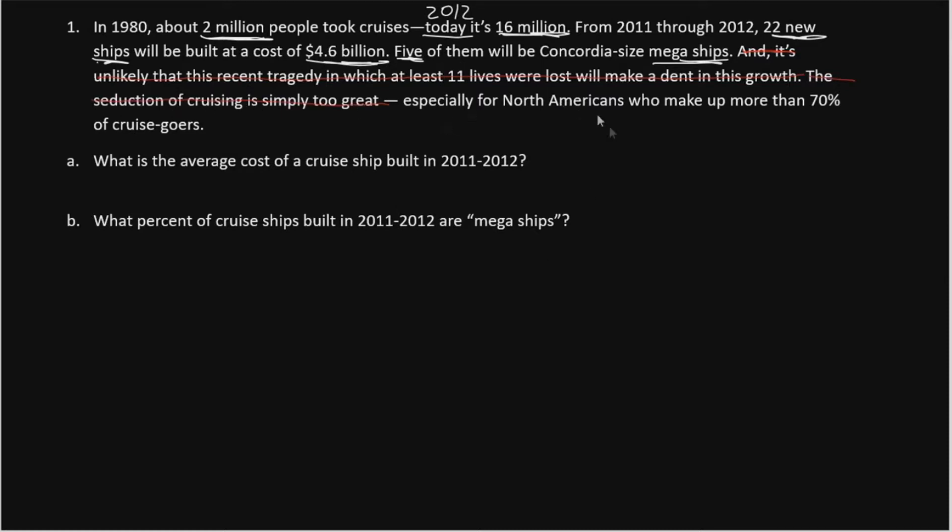The seduction of cruising is too great? Probably not going to help us either. Let's cross that out. Especially for North Americans who make up more than 70% of cruise goers, again, probably not going to help us either. So what you might find in Math 143 is that a large part of the writing they give you does not actually help you solve the problem. If you notice there are words in the way of what you're trying to look at, it's a good idea to cross them out.